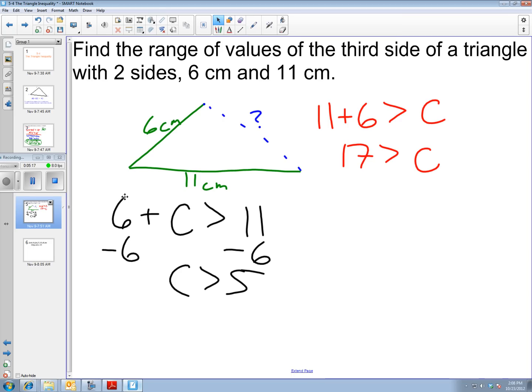We are going to write this as a compound inequality. That means C goes in the middle and we know that C has to be bigger than 5 and smaller than 17.